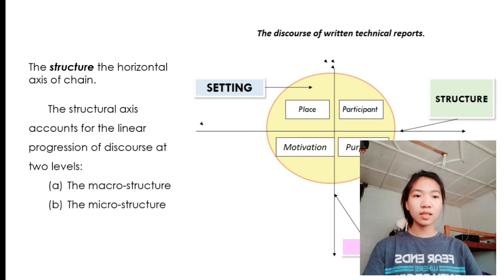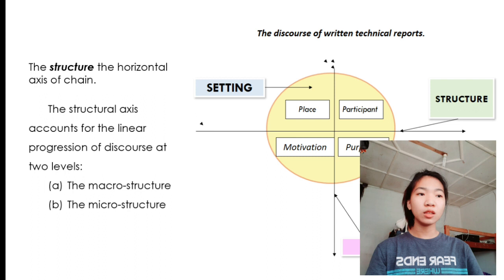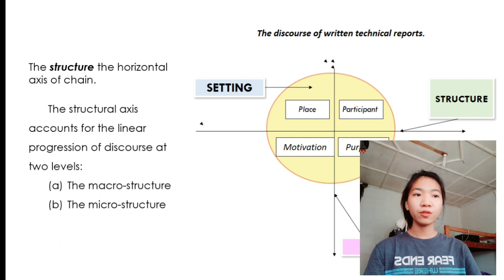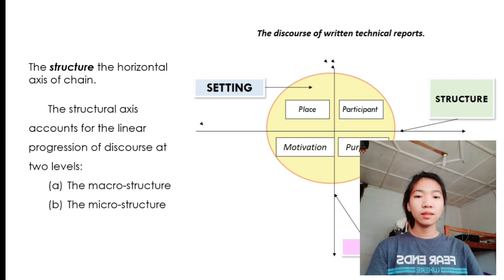And for the last axis, which is the structure, it is the horizontal axis of chain. It provides a neat way of conceptualizing how discourse units are combined and build up to form the different sections and moves into which written technical reports can be divided. The structural axis accounts for the linear progression of discourse at two levels: the macrostructure and the microstructure. Macrostructure involves the discourse sections into which the written technical report may be divided, while microstructure comprises the discourse or rhetorical movements within each section.